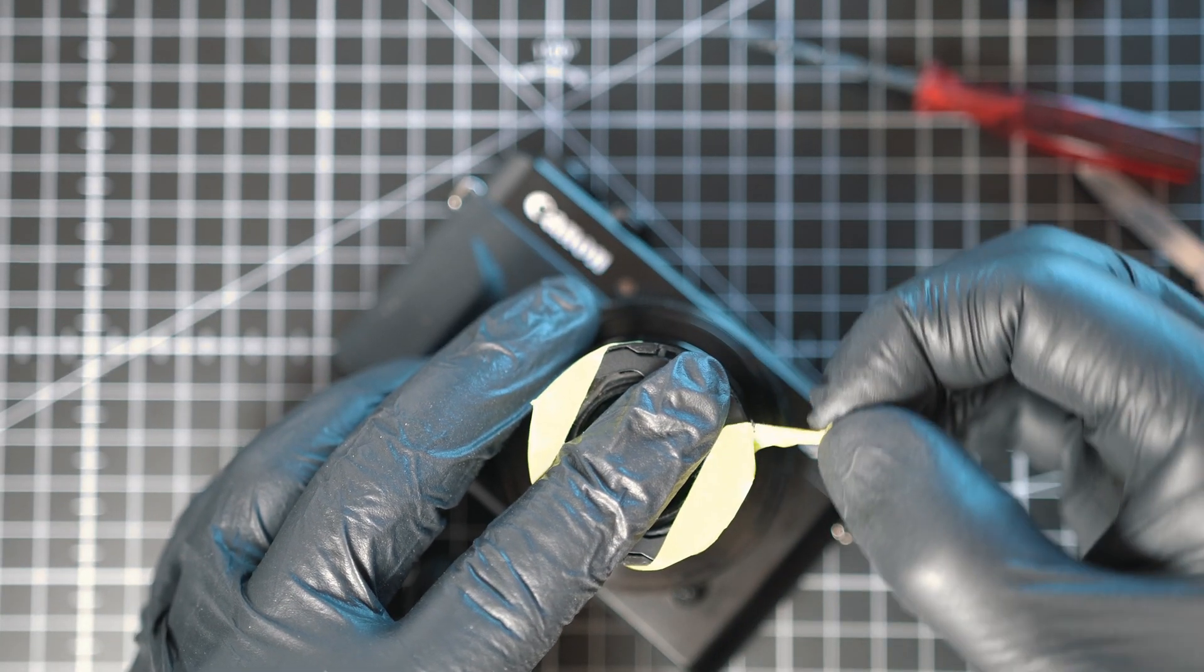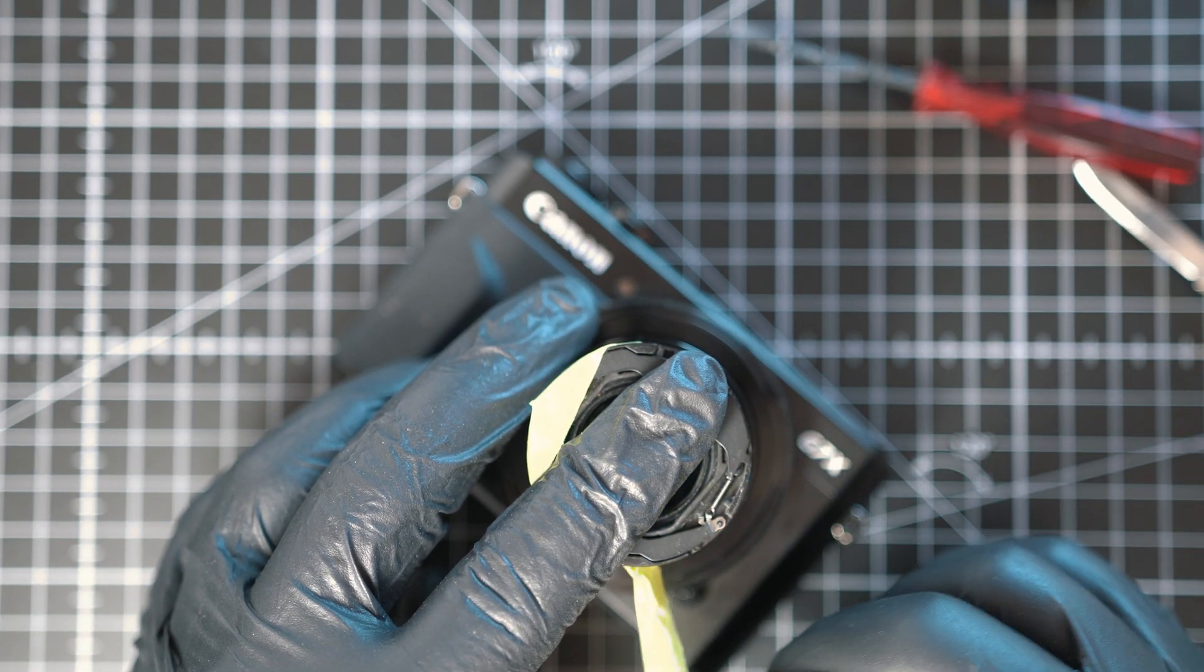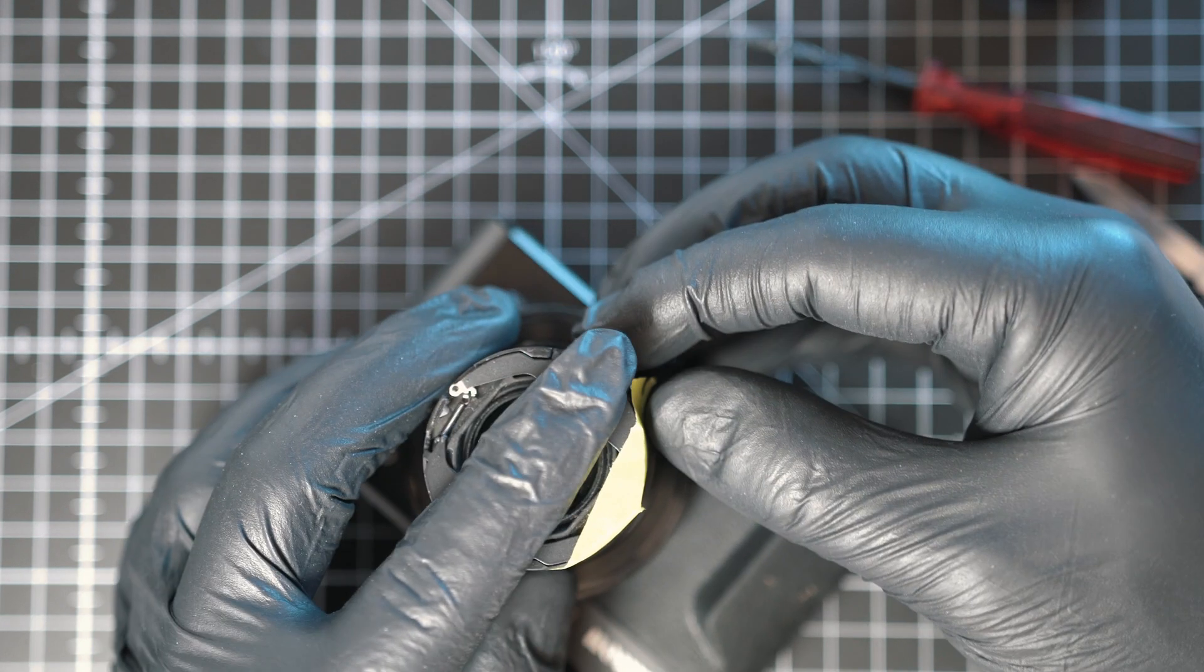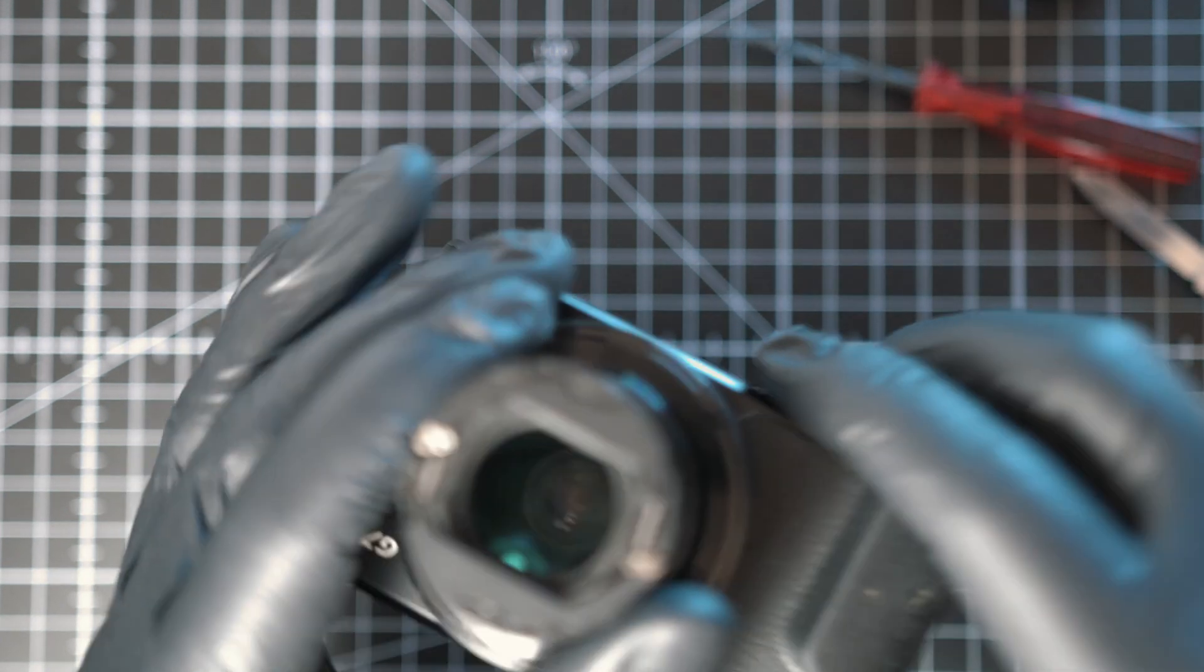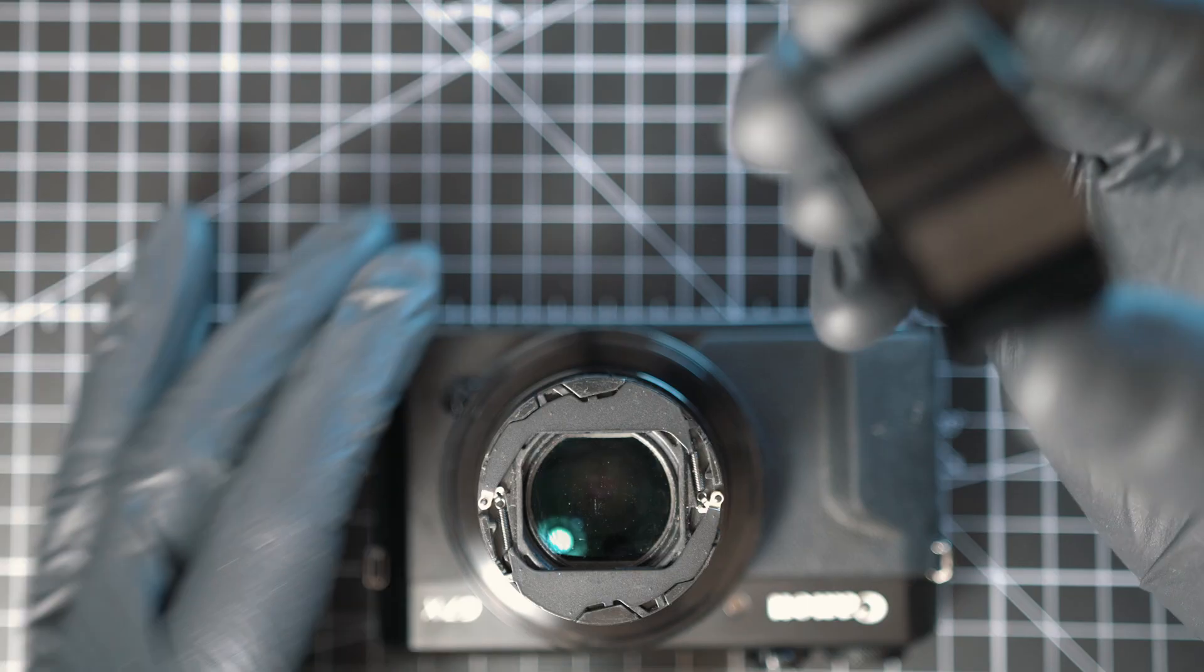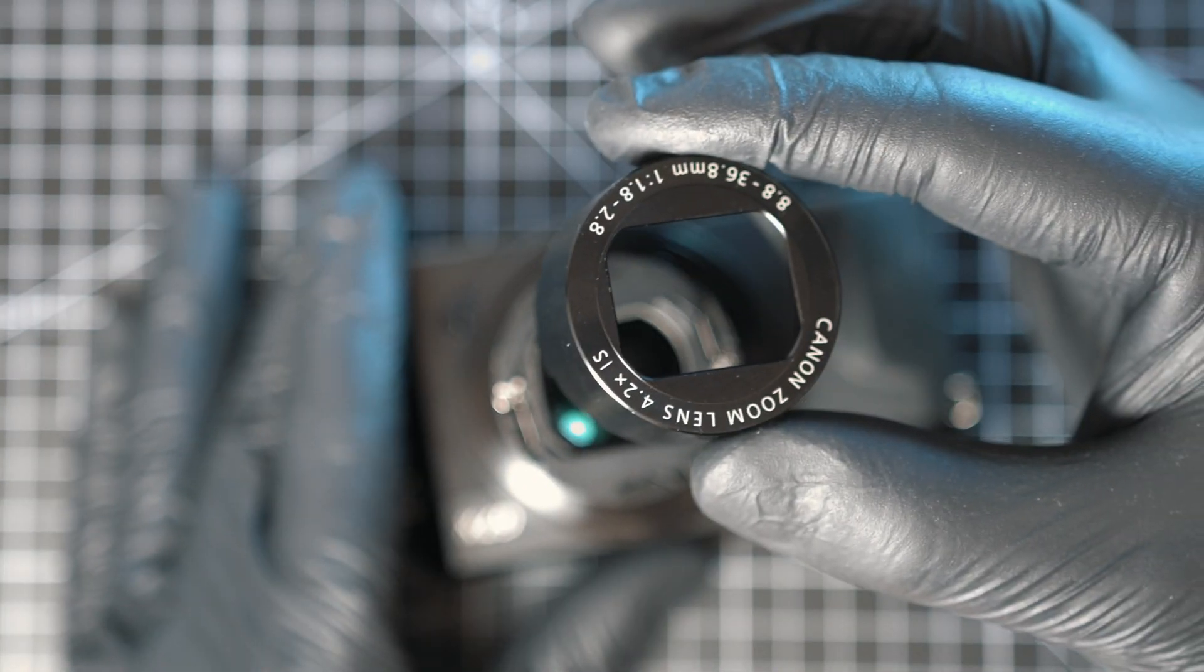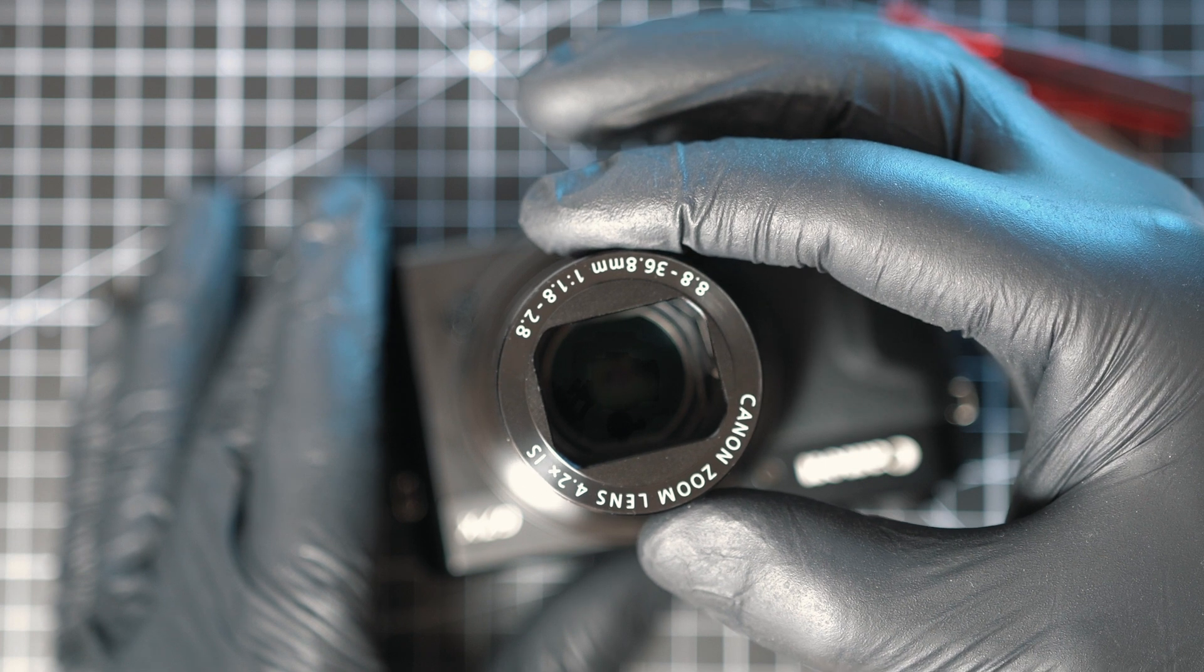Remove tapes from blades and insert front barrel. The orientation is obvious. Push it in and twist.